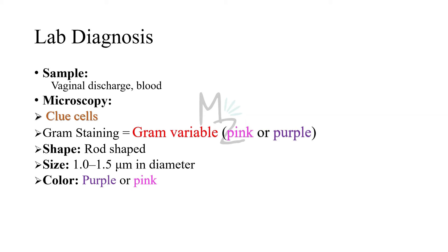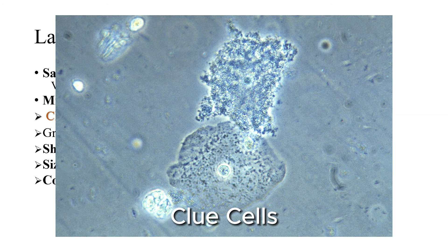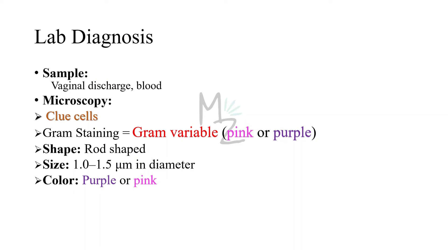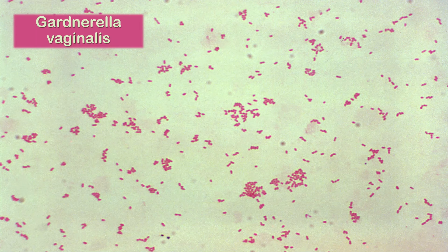Lab diagnosis will require samples of vaginal discharge and blood. On microscopy, we'll find clue cells, which are vaginal epithelial cells covered with bacteria. On gram staining, this bacterium is gram-variable — meaning it appears pink or purple, both gram-positive and gram-negative. It is rod-shaped but we can also see its cocci form, which is why the specimen appears as coccobacillus. It varies in size from 1 to 1.5 micrometres and is purple or pink in color under the microscope.